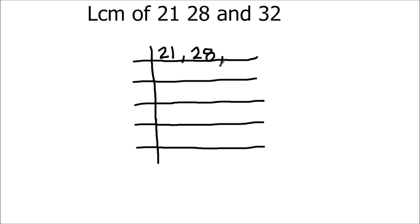So let's divide 21, 28, and 32 using the prime factorization method. In this method, we divide numbers using prime numbers and find the factors.